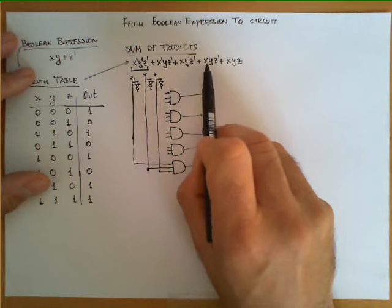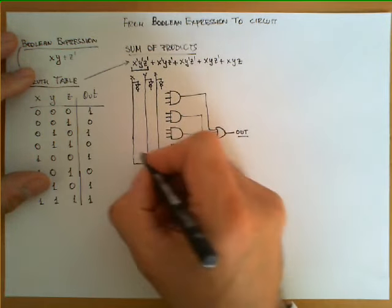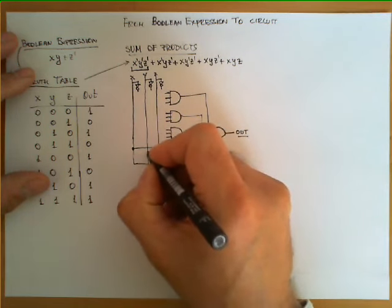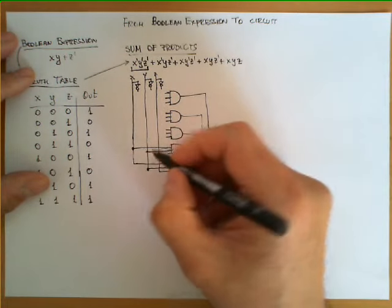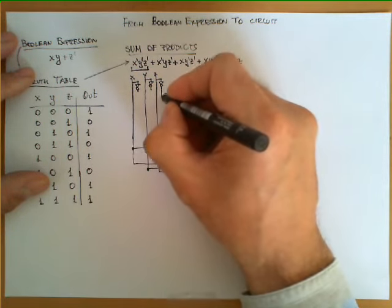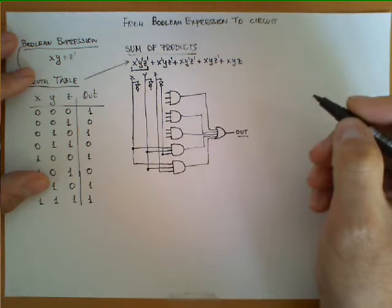We do exactly the same for the previous and in this case it's x, y and z prime. So x I simply connected like this, y I connected like this but now z prime rather than connected to this line which is z I have to bring the value of this signal all the way down here and connect it like this.